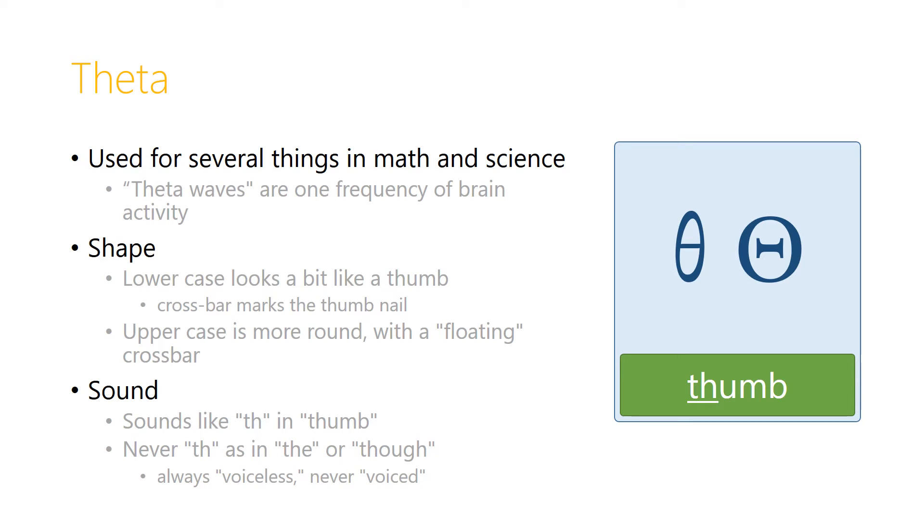The next letter we're going to look at today is the letter theta. Again, this is used for several things, one of which is theta waves, which are one frequency of brain activity. The shape in the lowercase looks a bit like a thumb, doesn't it? A sort of oblong with a line through the middle that could be the base of the thumbnail.